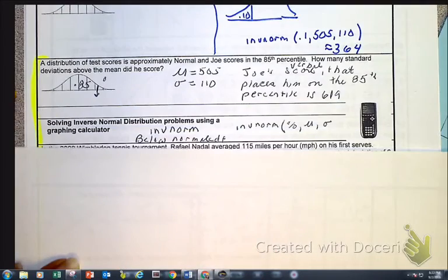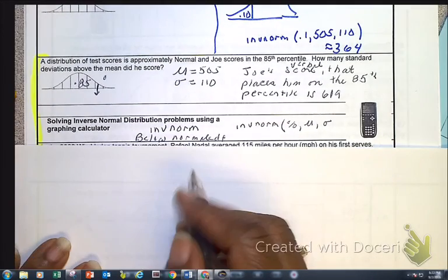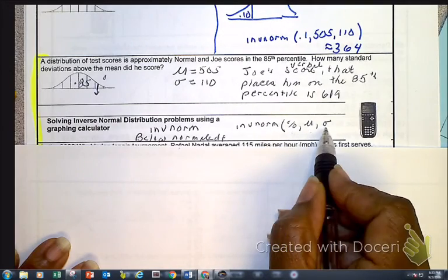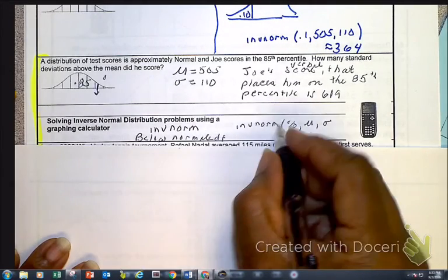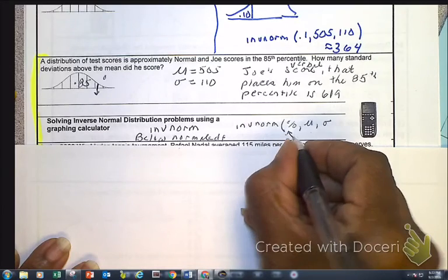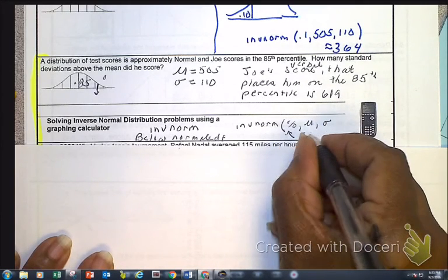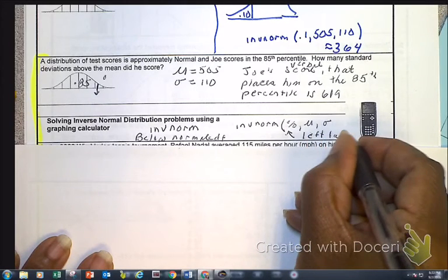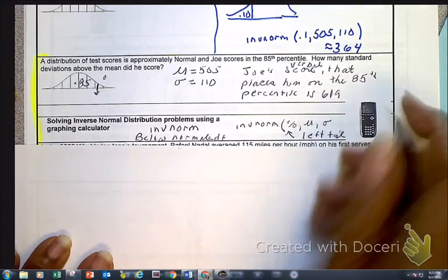Just remember when it comes to inverse norm, you are going to be putting in the percent, the mean, and the standard deviation. And please remember this percent is whatever is on the left tail.